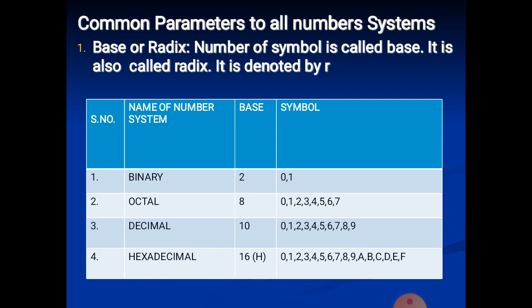One important parameter is called radix, denoted by R. We are talking about what we call base. The number of different symbols used in a number system is called the base. Base is called R, also called radix, so we denote it as R.